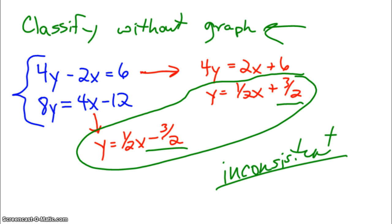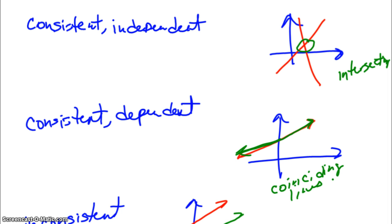So, I want to look back quick on this page. A consistent independent system, well, what are our slopes going to be? Our slopes are going to be different, right? As long as slopes are not equal, we have two lines with different slopes. Somewhere, somehow, they're going to intersect. It may not be in a nice, easy, obvious place, but if the slopes are not the same, they are going to intersect.